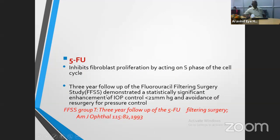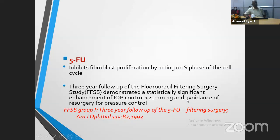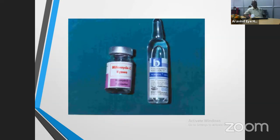Initially, about three to four decades ago, the Fluorouracil Filtering Surgery Group demonstrated a statistically significant enhancement of IOP control (less than 20 mmHg) and avoidance of medication for pressure control. That study was conducted about 30 years ago. So you must know how 5-FU is available: it is available as an aqueous solution, a 10 ml ampule where each ml contains 50 mg, so total strength is 500 mg per ampule.